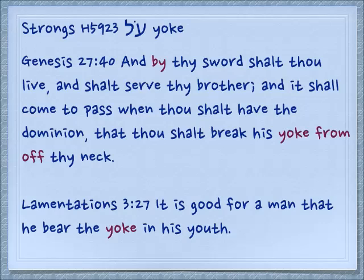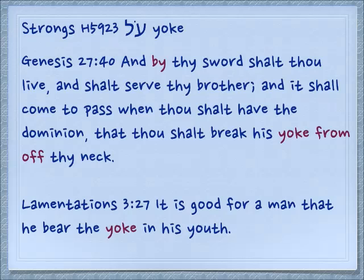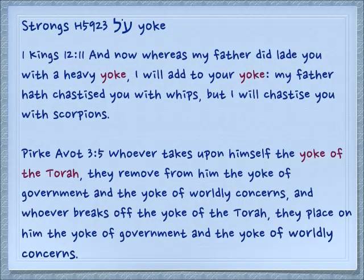Another related idea of something being on something is the word ol, which means 'yoke.' Genesis 27:40 — 'And by thy sword thou shalt live, and shalt serve thy brother, and it shall come to pass, when thou shalt have the dominion, that thou shalt break his yoke' — that is the preposition al, Ayin-Lamed — 'from off his neck.' The word yoke is a physical implement which goes over the neck of the animal. Lamentations 3:27 — 'It is good for a man that he bear the yoke in his youth,' that he learn how to work in a disciplined way. 1 Kings 12:11 — 'And now whereas my father did lade you with a heavy yoke, I will add to your yoke. My father hath chastised you with whips, but I will chastise you with scorpions' — a very foolish Rehoboam.